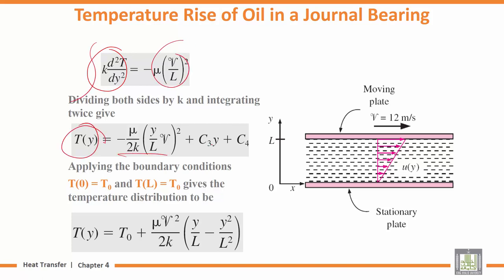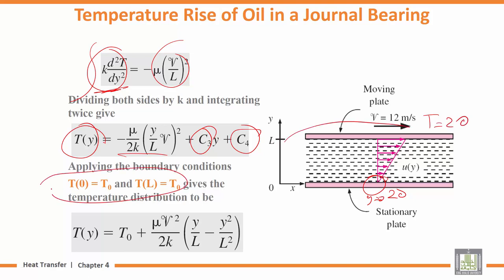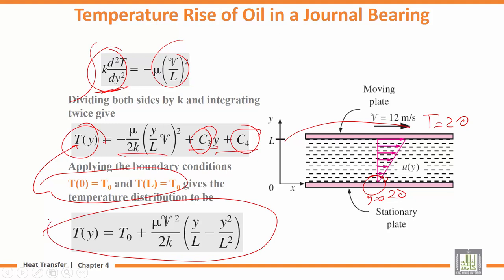Integrating the energy equation twice gives T(y) = C3·y + C4. Applying boundary conditions: T(0) = 20°C and T(L) = 20°C. Substituting these conditions gives us C3 and C4, completing the temperature distribution T(y) at every point along y.